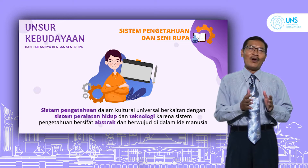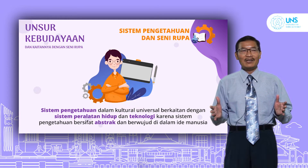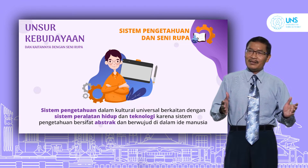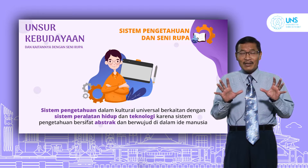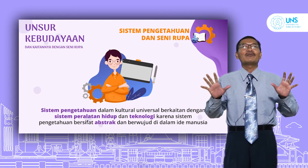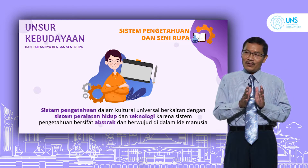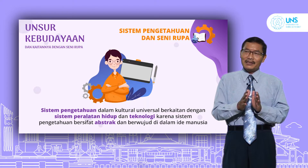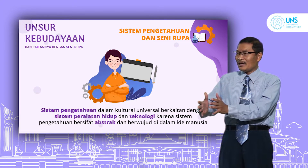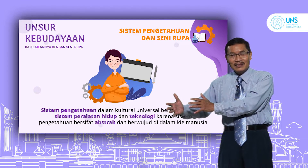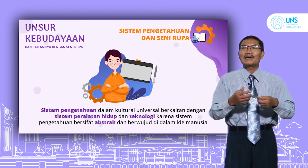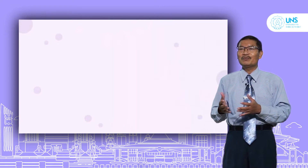Seni rupa juga seperti itu. Wayang-wayang yang ada di Jawa ada wayang rasekso dan wayang satrio. Unsur visual pada wayang rasekso dan wayang satrio juga merupakan pengetahuan lokal Jawa: yang satrio menghadapnya ke kanan atau pada tatanan bagian kanan, sedangkan yang rasekso pada tatanan yang kiri.